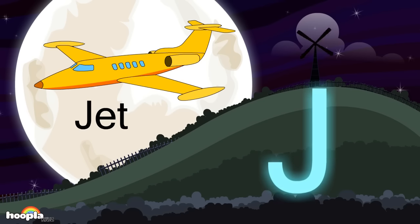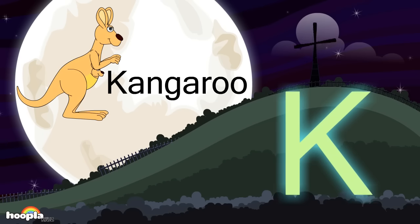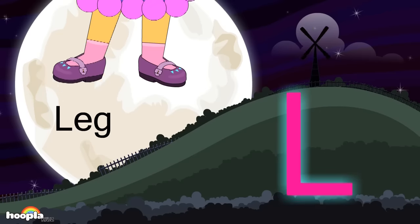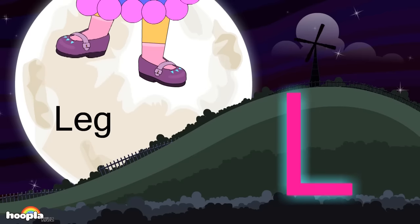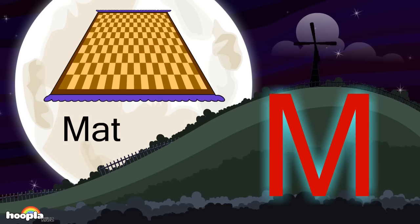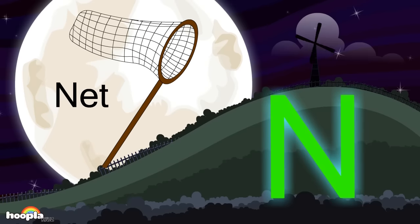J for jet, K for kangaroo, L for leg, M for mat, N for net.